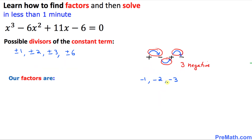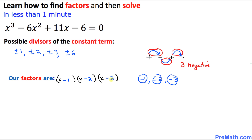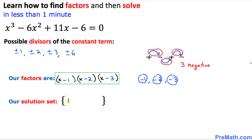All 3 numbers are negative as we predicted. So our factors are simply three parentheses: (x − 1)(x − 2)(x − 3). And our solution set is the same numbers with the sign changed — negative becomes positive — so it's going to be positive 1, positive 2, and positive 3.